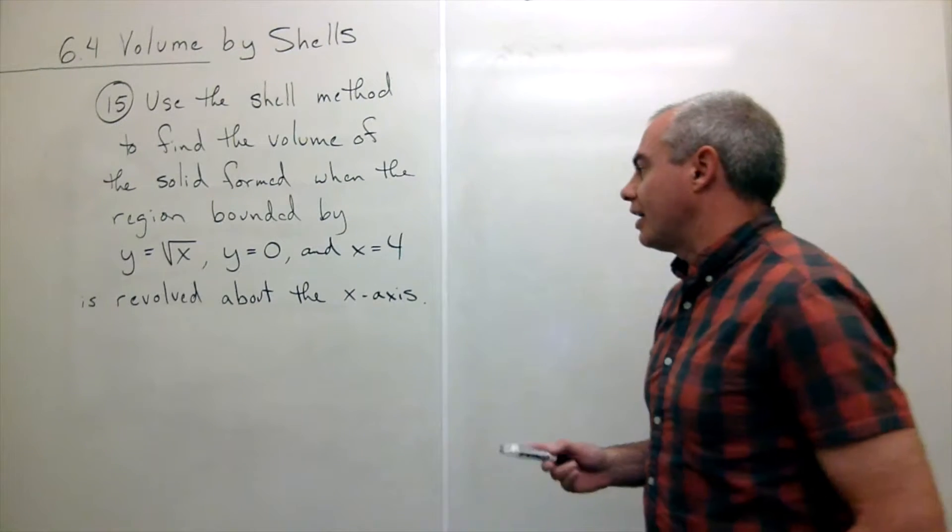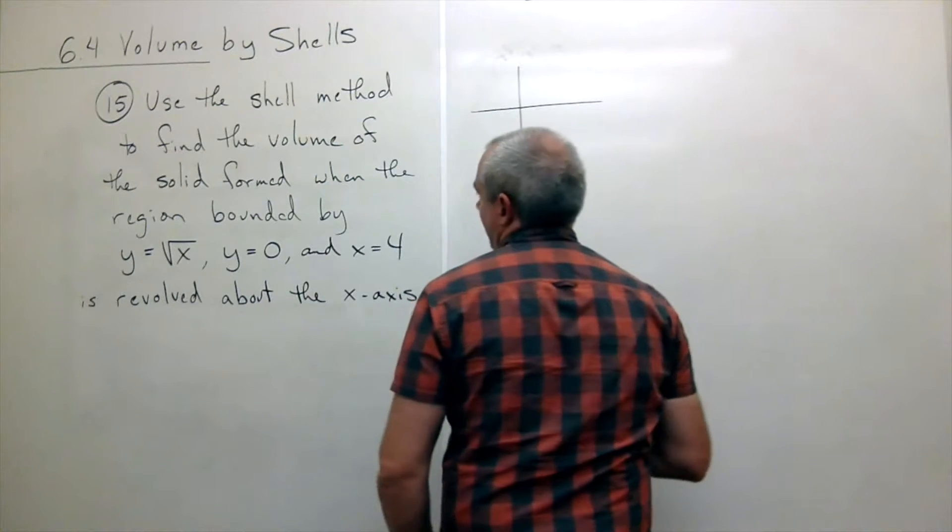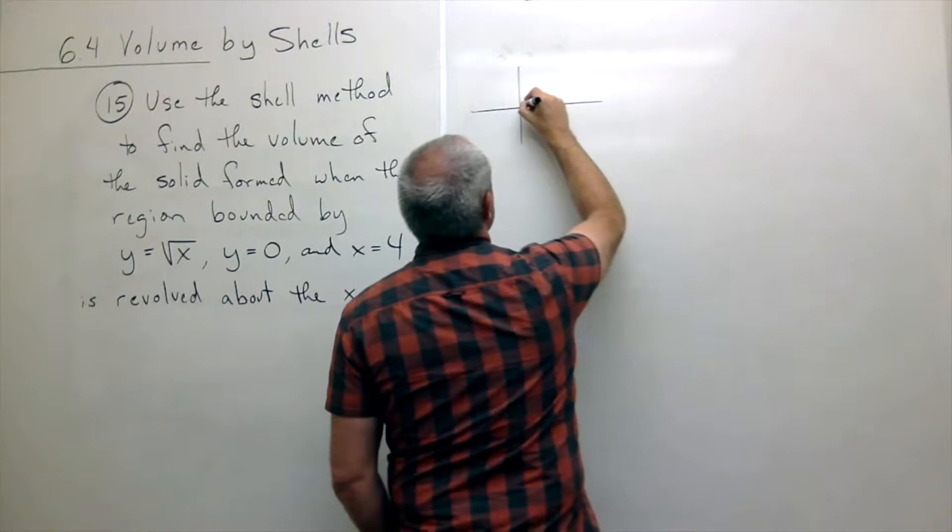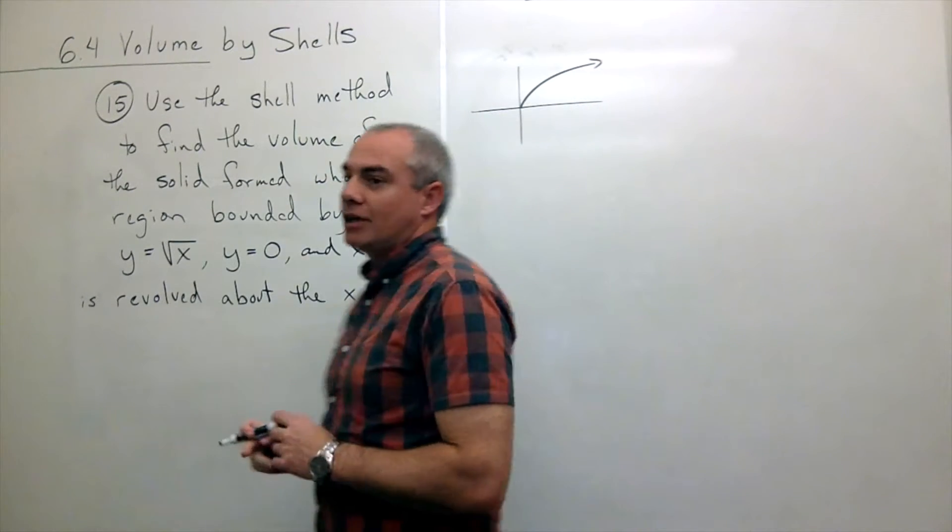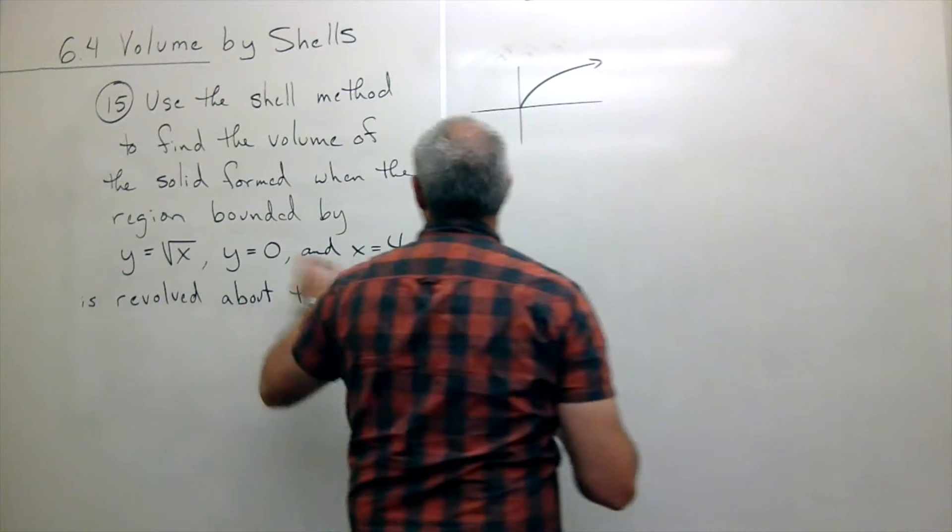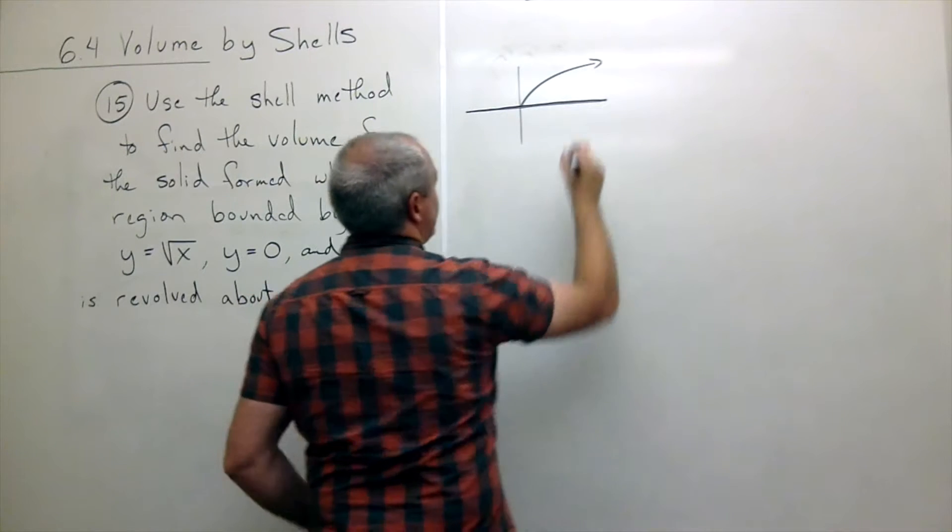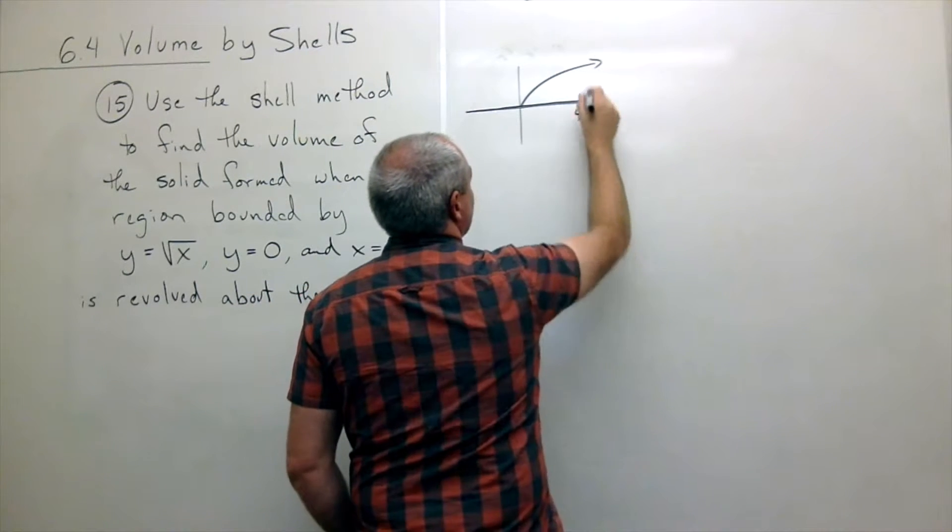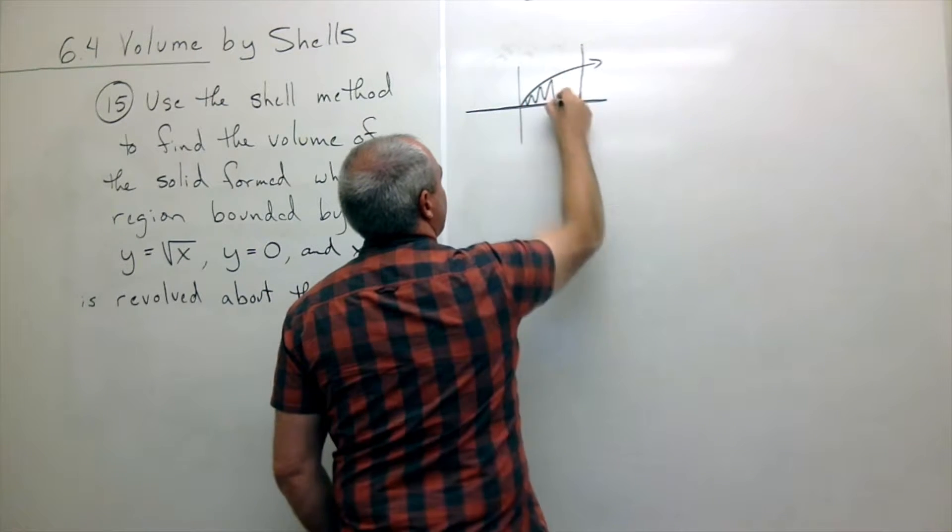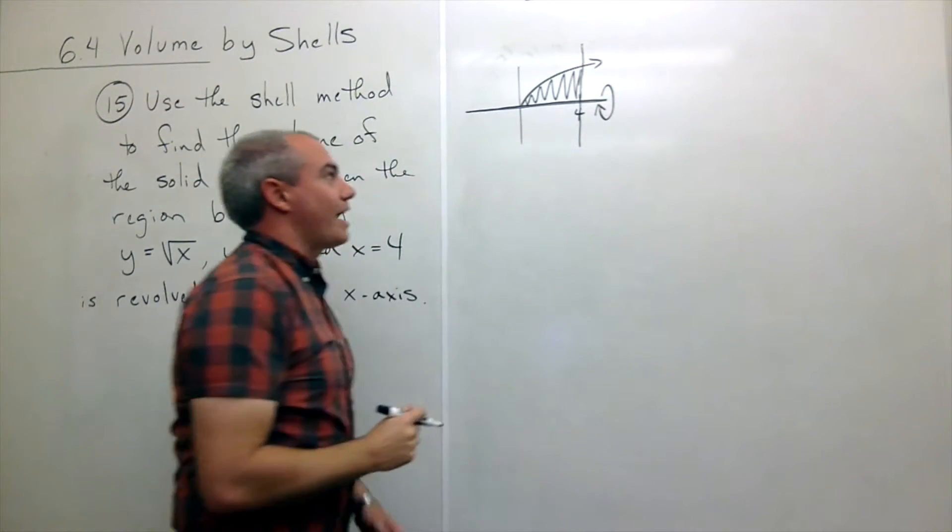So let's just start out by drawing a quick picture and see what we're doing here. Here's my x and y-axis. Y equals the square root of x is the top half of a parabola that opens up this way. Then we have y equals 0 which is my x-axis. And then I have x equals 4 out here which is just a vertical line. So I get this region and I want to revolve that around the x-axis.